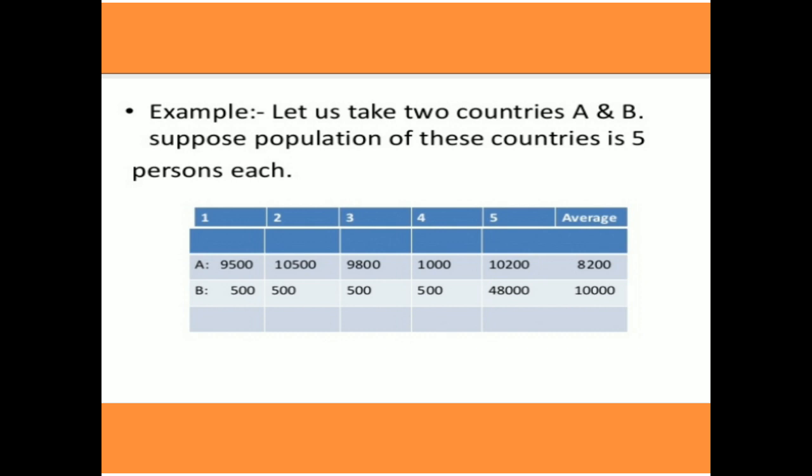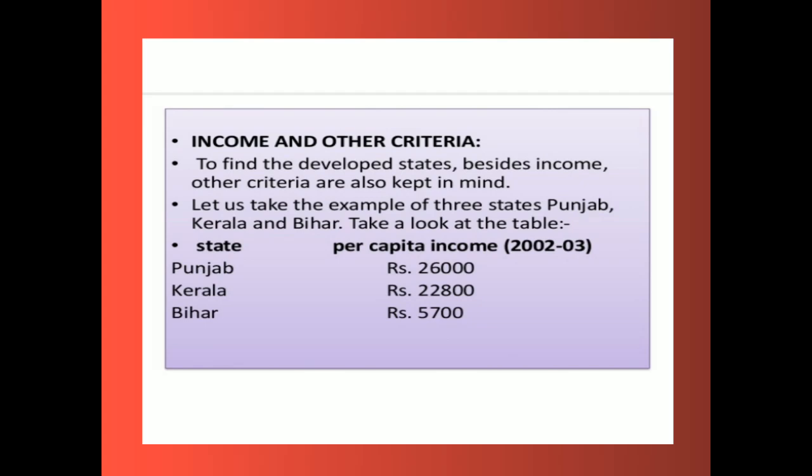Let us look at an example. Suppose there are two countries A and B, each with a population of five persons. Country A earns a total of 41,000 and Country B earns 50,000. When we divide total income by total population, per capita income for Country A is 8,200 rupees per person and for Country B it is 10,000 rupees.